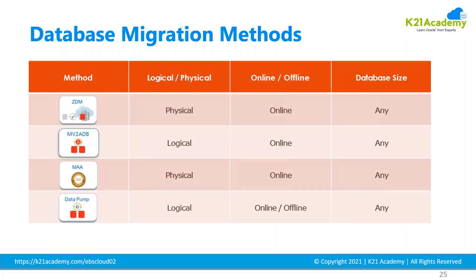There are a couple of database migration methods available, like Zero Downtime Migration (ZDM), which is basically physical migration done online. ZDM follows the approach of creating a standby database. Then there is migration to Autonomous Database, for which Oracle provides the MV2ADB tool, which performs logical migration — taking an export of your database and migrating it via CLI and APIs. However, EBS is not yet certified with Autonomous Database.